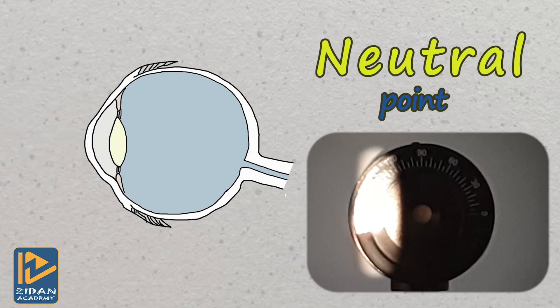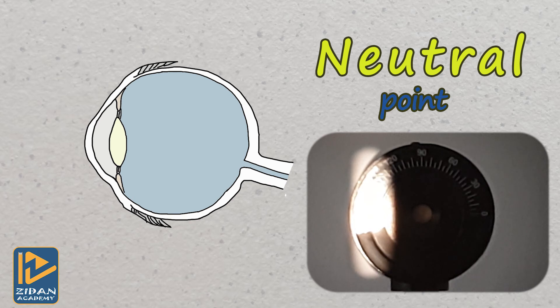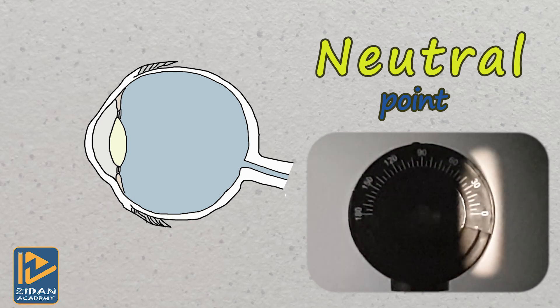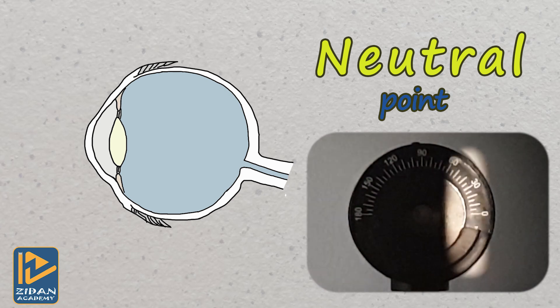And finally, let's move to the neutralization state. Here is our video again. The pupil is filled with light and there is no definite with or against movement that could be seen.